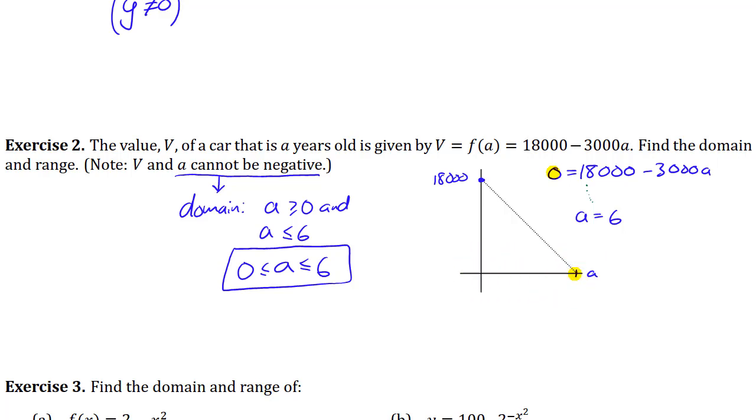And so yeah that's all of these coordinates here. Now the range is a set of y coordinates that you get. So if a is less than 0 you would get values greater than 18,000 but that's not how it works. We're only allowed to have a between 0 and 6. So the values of the car are all between 18,000 and 0.